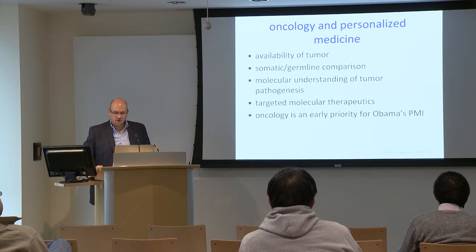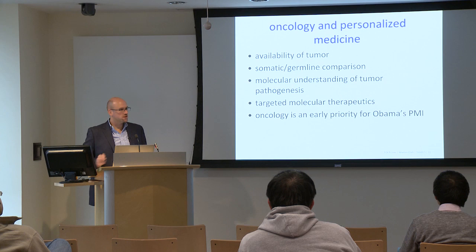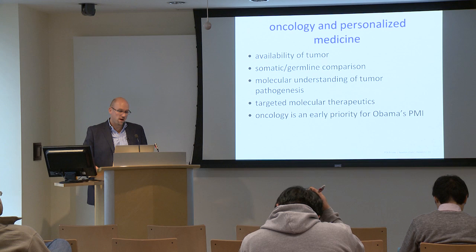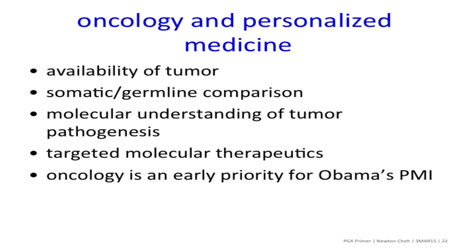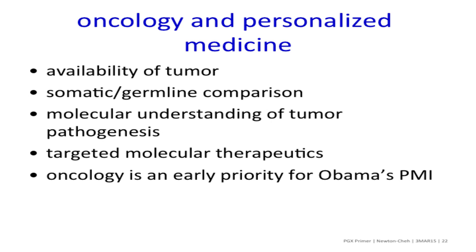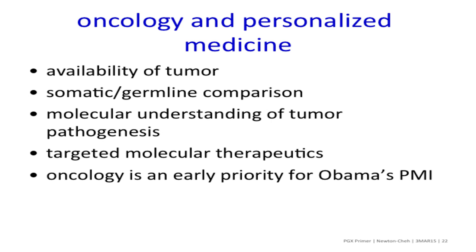Personalized medicine works here because of several key features. It's important to recognize the difference between somatic genetic variation and germline variation. Many opportunities in oncologic discovery include the availability of tumor tissue and the ability to make tumor-to-germline comparisons. This has led to a molecular understanding of tumor pathogenesis through serial sampling. Because tumor gets removed, it's readily available for study — as opposed to, say, myocardial infarction, where we do not routinely remove coronary arteries to enable understanding of pathogenesis in humans. This has really led to targeted molecular therapeutics.